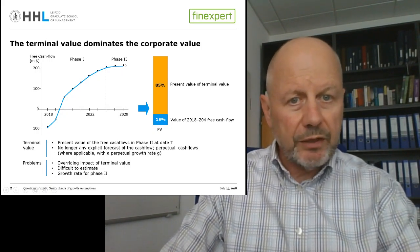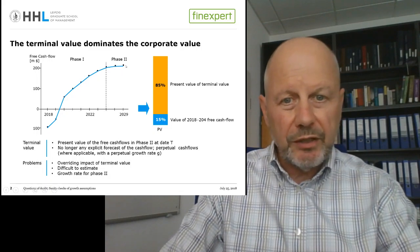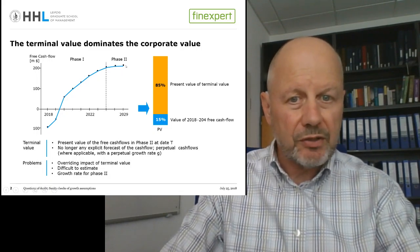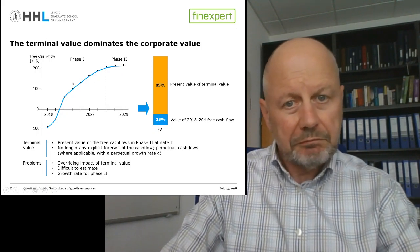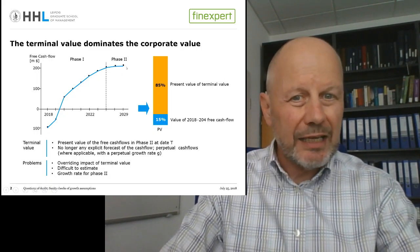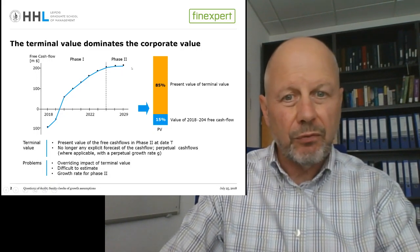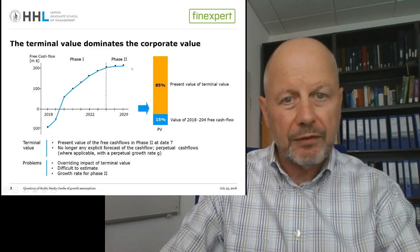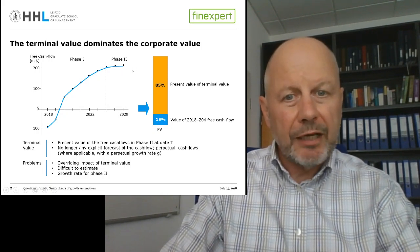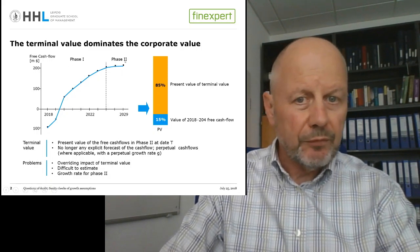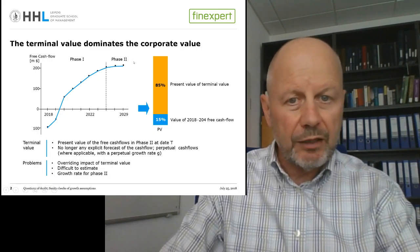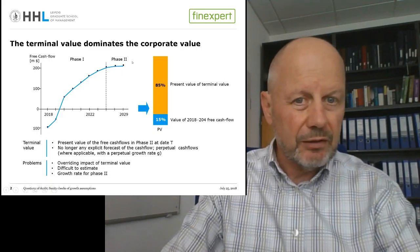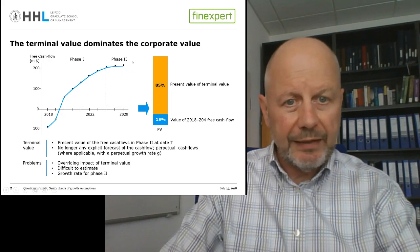This growth rate in the terminal value calculation has all the ingredients to make it a standard battlefield: first, phase two is far away — five to six years — so there is a high degree of uncertainty about the appropriate growth rate; and second, the choice of this growth rate has a major impact on the terminal value and therefore on the value of the firm, because terminal value contributes more than 50 to 60% to the total value of the firm even in mature companies.